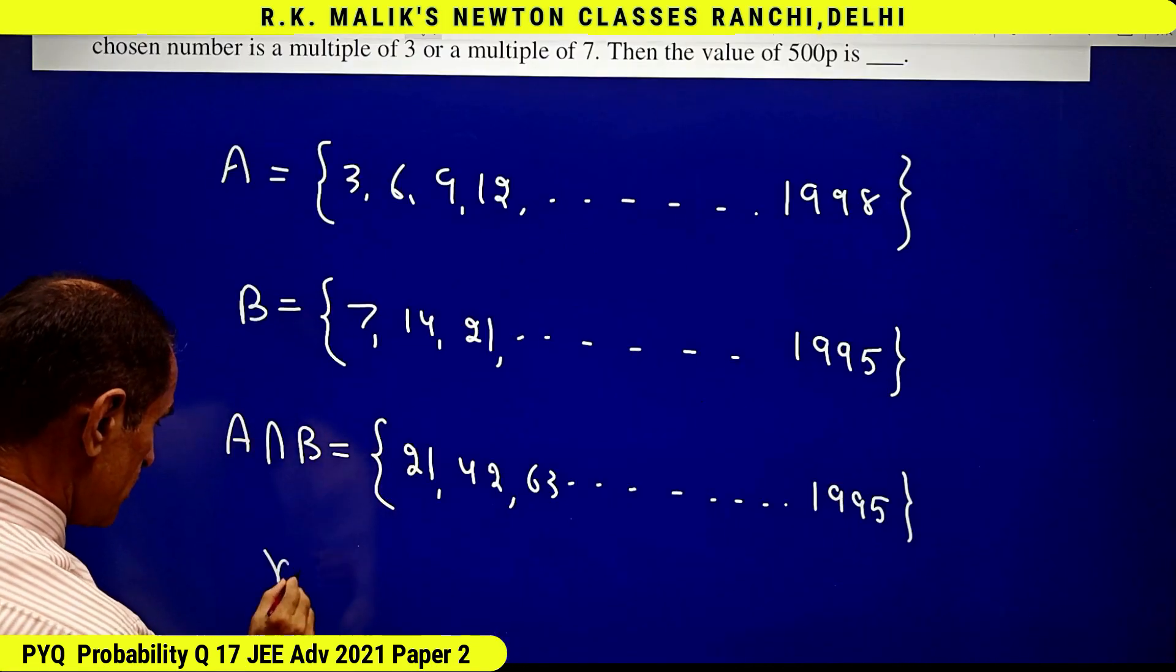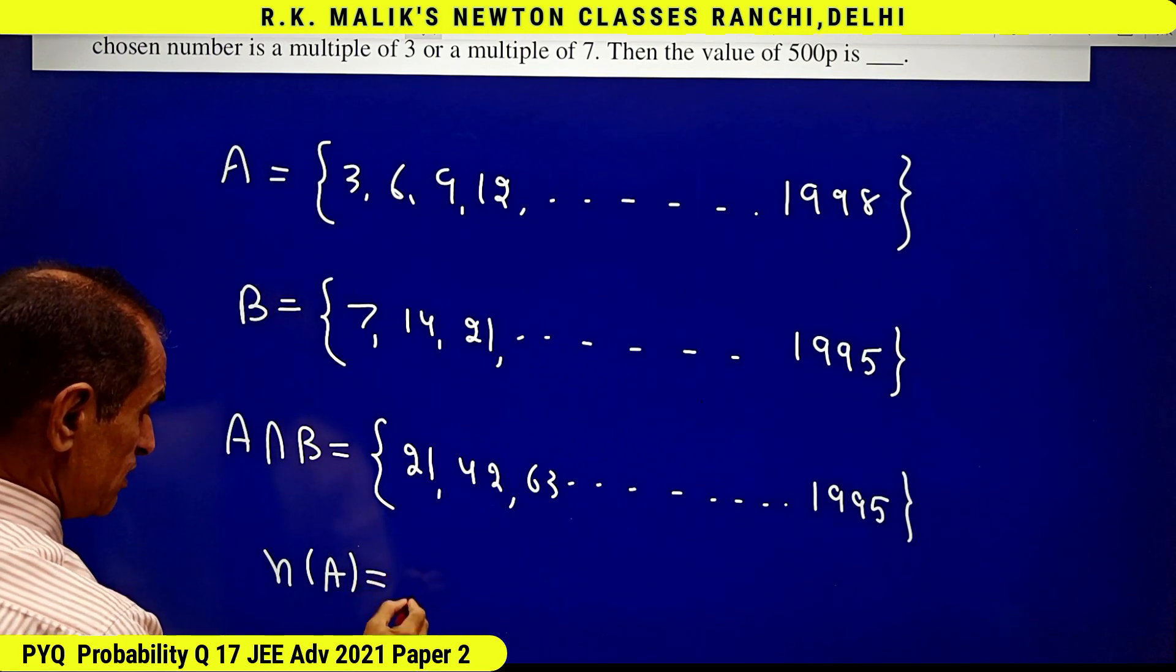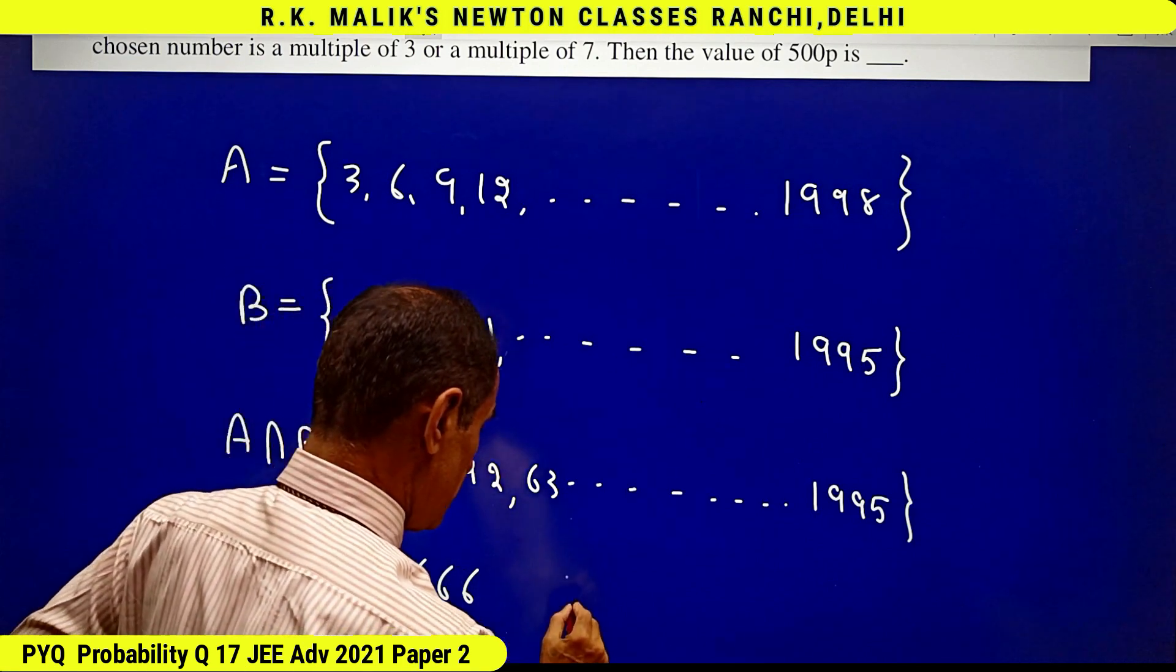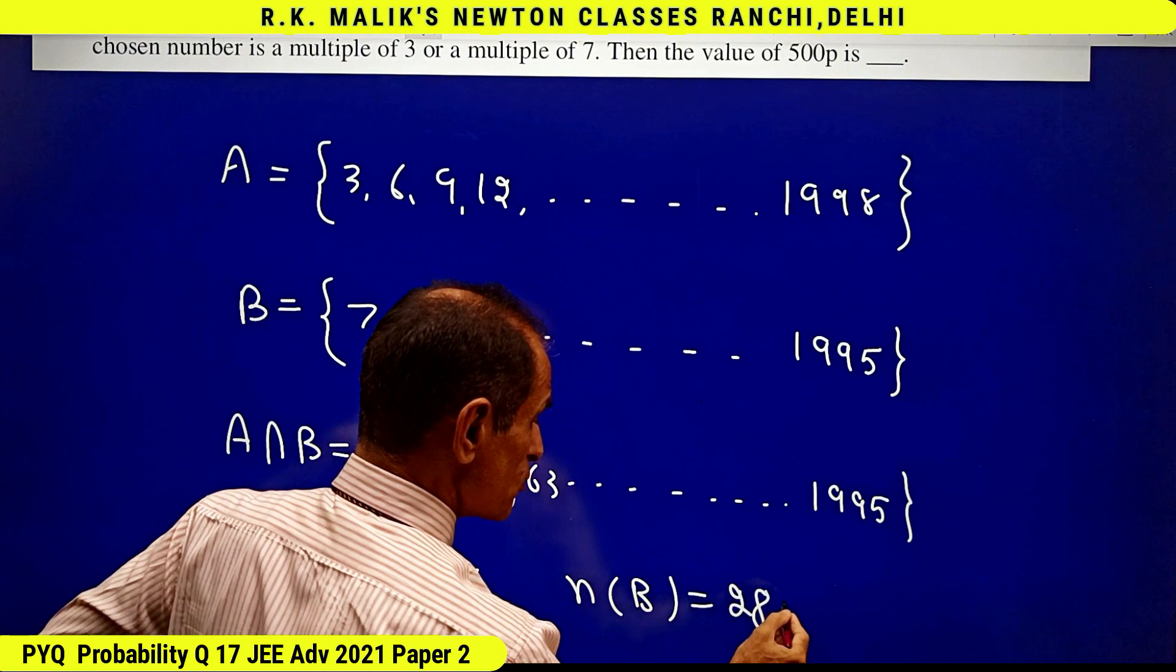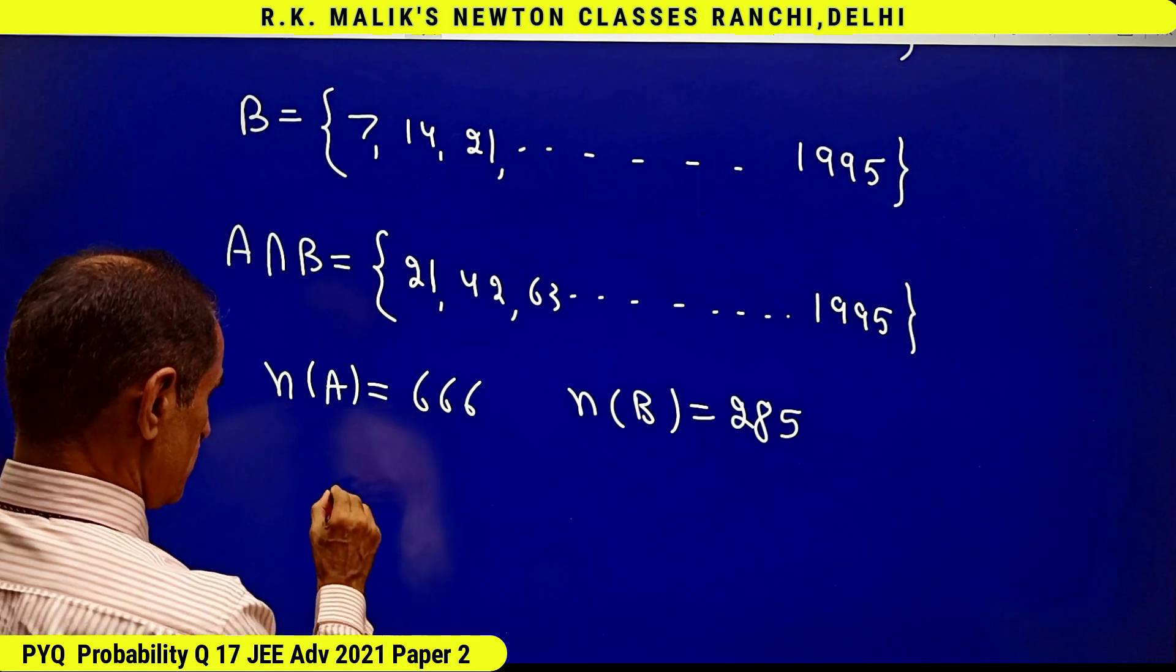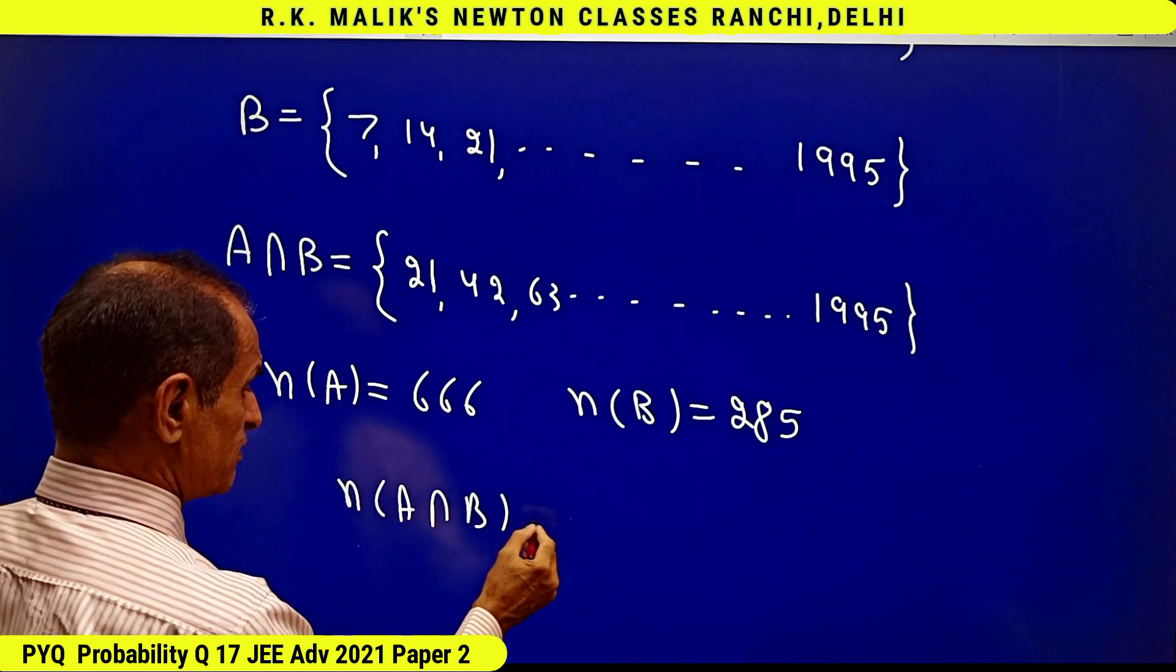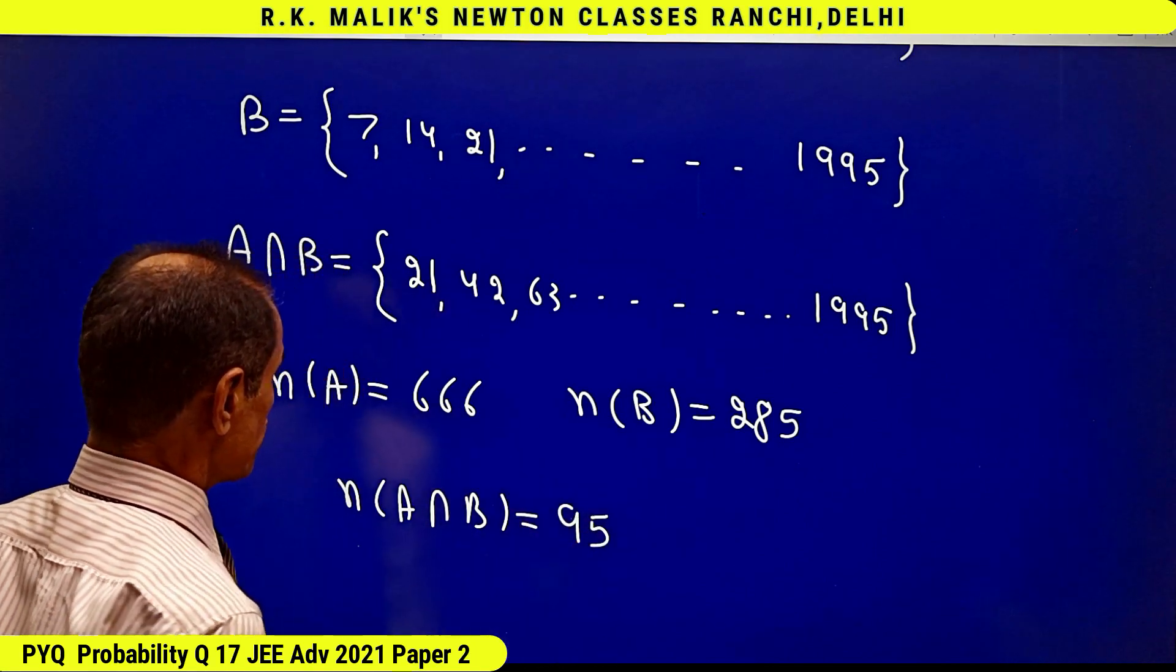It's clear that number of elements in A is 666. Number of elements in B is 285. How I have found this is just basic level mathematics. Number of elements in A intersection B will be 95.